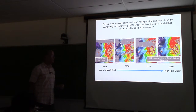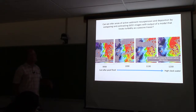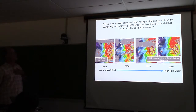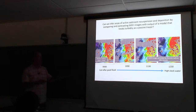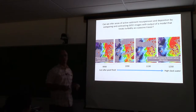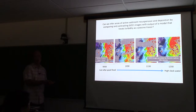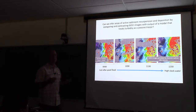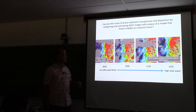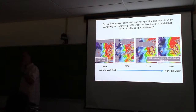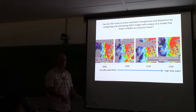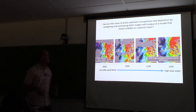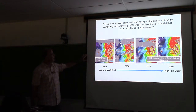Here are some example images from GOCI when we were out there a year ago. The basic question we posed in our proposal: can we infer areas of active sediment resuspension and deposition by comparing GOCI images with the output of a model that treats turbidity as a passive tracer? The Naval Research Lab model takes an image and advects that field based on the currents. If you see bright spots where there's more sediment than the model predicts, you can infer resuspension; dark spots indicate deposition. What we expected to see was tidal channels lighting up as tides flowed and sediment came to the surface. That is not what we saw.